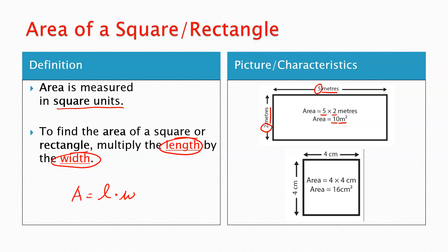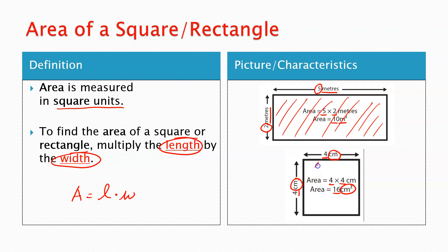Same thing for the square below — you take your length, 4, and multiply it by your width, 4. 4 times 4 gives us 16, and because we multiplied centimeters times centimeters — think of it like x times x — we get centimeters to the second power. It's a two-dimensional shape, and that's what it's representing. We're looking at the space inside for both of these. The top one has an area of 10 meters squared inside — that's how much space. The bottom one has 16 centimeters squared.